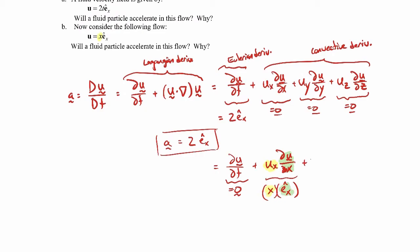And then the rest of these terms: there is no y component and it's not a function of y, so that's zero. And there is no z component, it's not a function of z, so this one is zero as well. So in the end, our acceleration for the second flow field is xe_x hat.